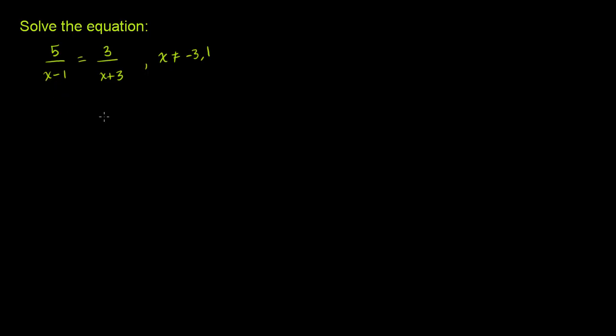So let's see what we can do here. Let me just rewrite it so we have some space to work with. So 5 over x minus 1 is equal to 3 over x plus 3, and we're going to assume these constraints throughout this video. Now, I don't like having my x terms in the denominator. So let's see if we can get them out of the denominator.